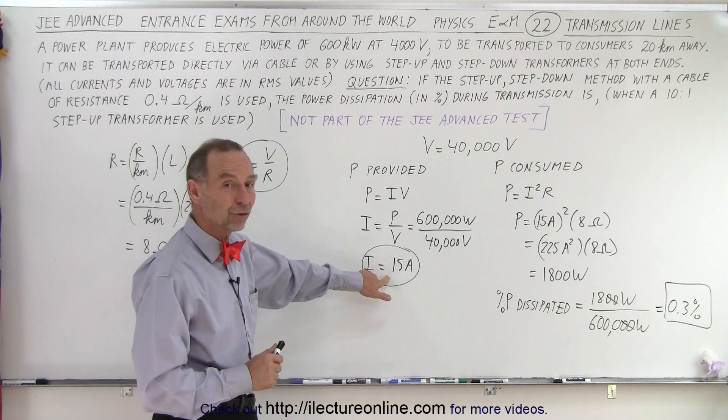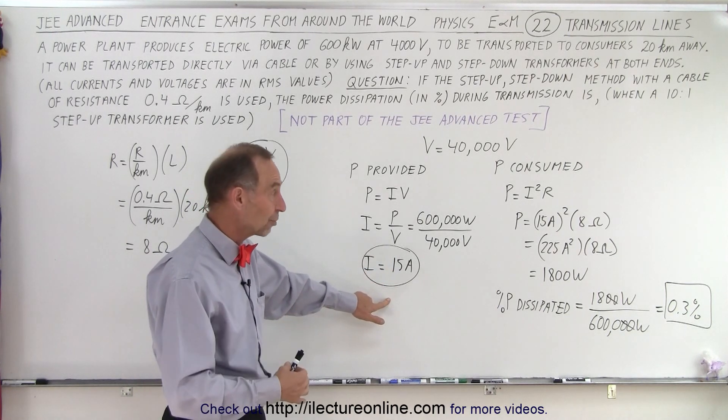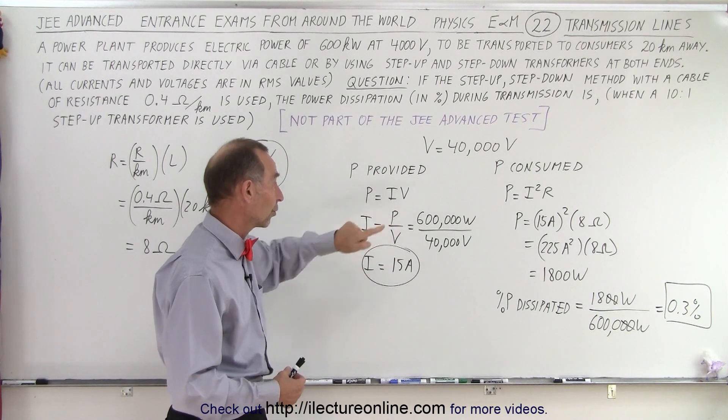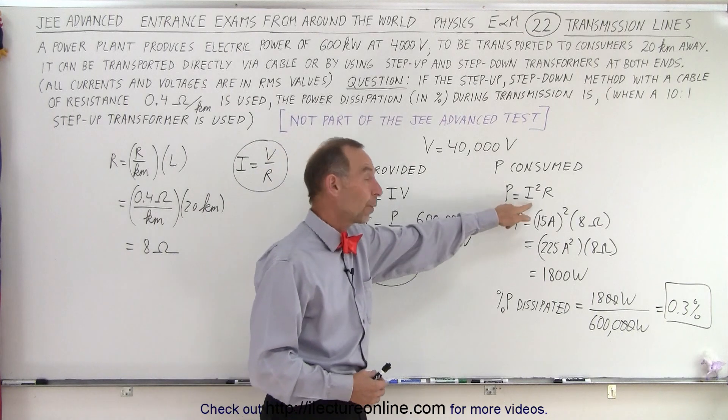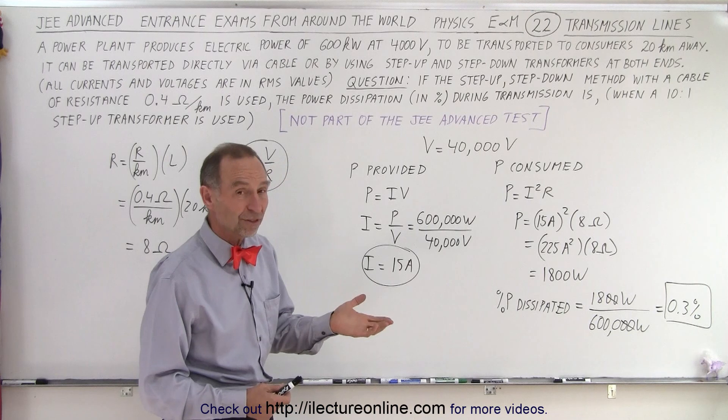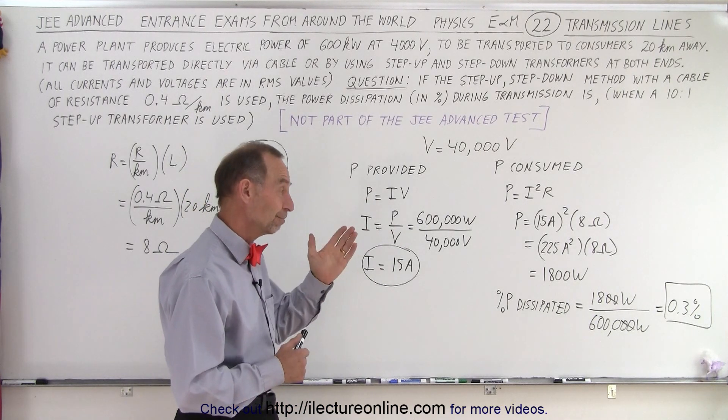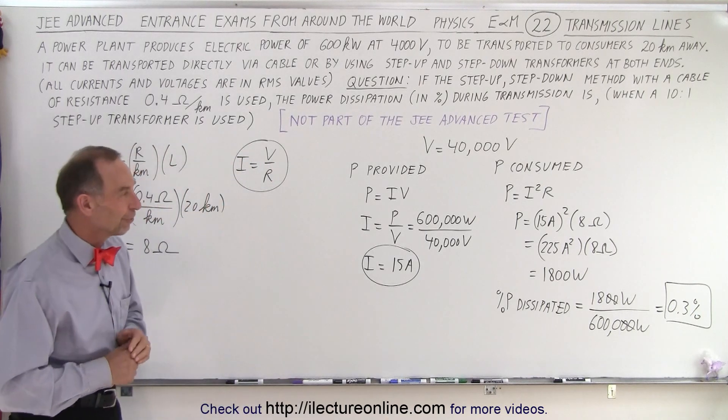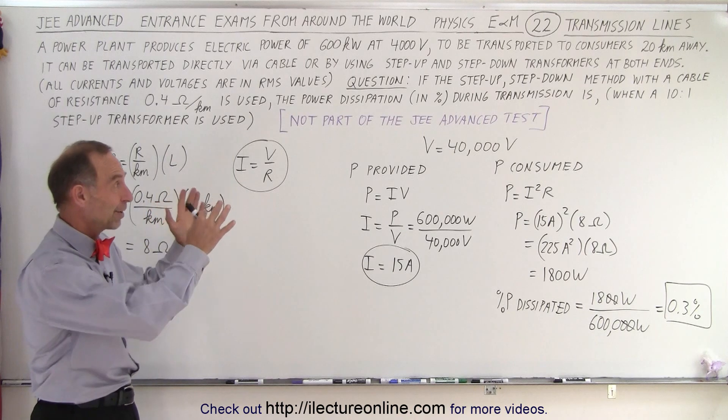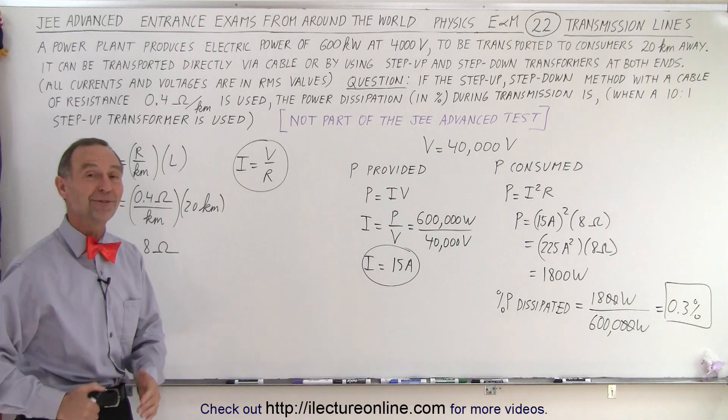But again, a drop from 150 amps to 15 amps, that's a 10 to 1 drop in the current, because we have a 10 to 1 increase in the voltage. Notice that voltage increases, current drops, but since we square it, that's a hundredfold decrease in the power consumed. So instead of 30%, all the way down to 0.3%. So that's why we do it. That's why we raise the voltage on those transmission lines. And even though it's not a part of the JE advanced test, I thought it was worthwhile showing. And that is how it's done.